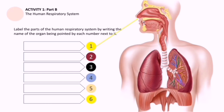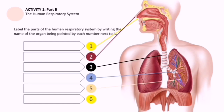For number one, what organ or part of the human respiratory system is being pointed? Number two — notice that they are really close to each other. Number three, number four. If I am going too fast, you may pause this video. Number five, and last, number six. Number six is pointing to those lighter red circles that you see right there.